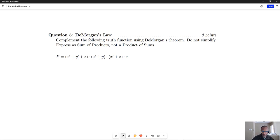This problem here is from Quiz 9, Fall 2023, and it's asking you to complement the following truth function using DeMorgan's Rule or DeMorgan's Theorem.